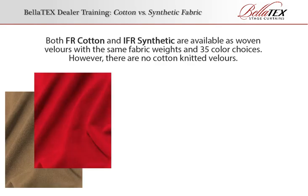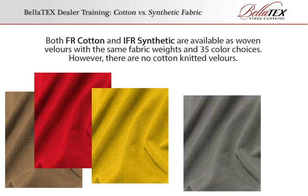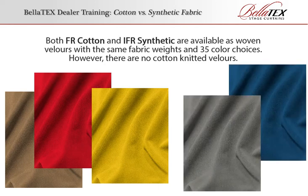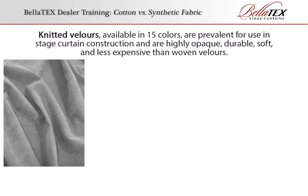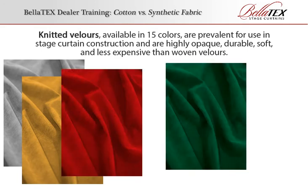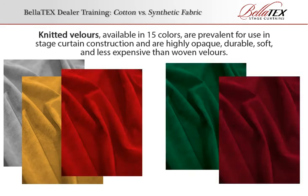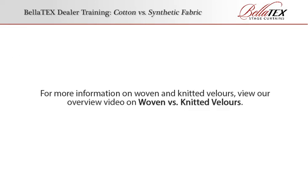Both FR cotton and IFR synthetic are available as woven velours with the same fabric weights and 35 color choices. However, there are no cotton knitted velours. Knitted velours, available in 15 colors, are prevalent for use in stage curtain construction and are highly opaque, durable, soft, and less expensive than woven velours. For more information on woven and knitted velours, view our overview video on woven vs. knitted velours.